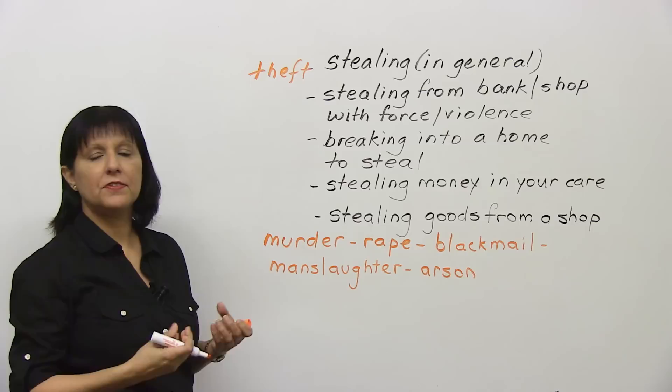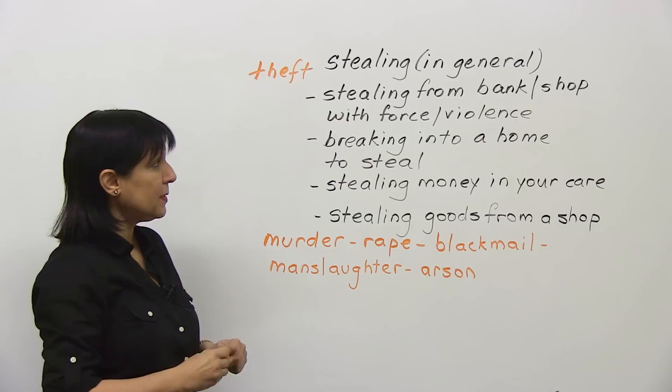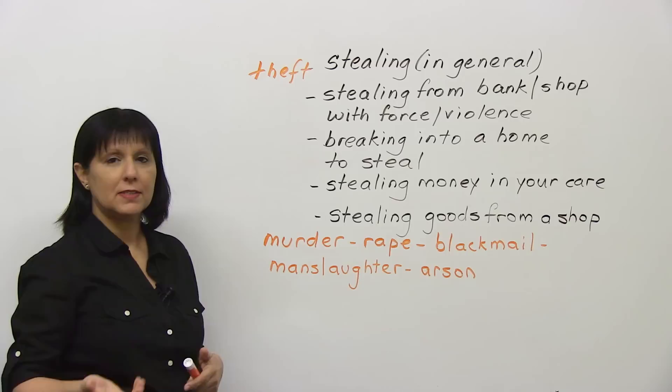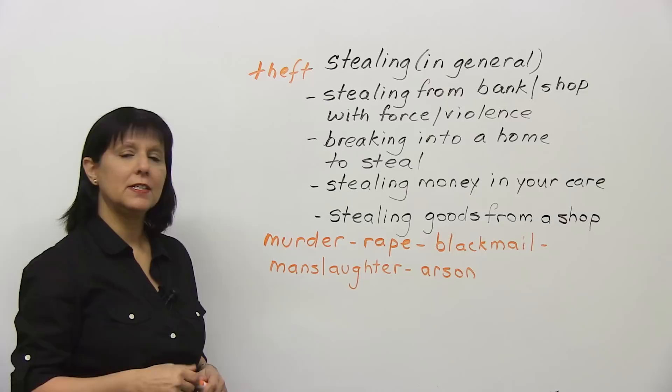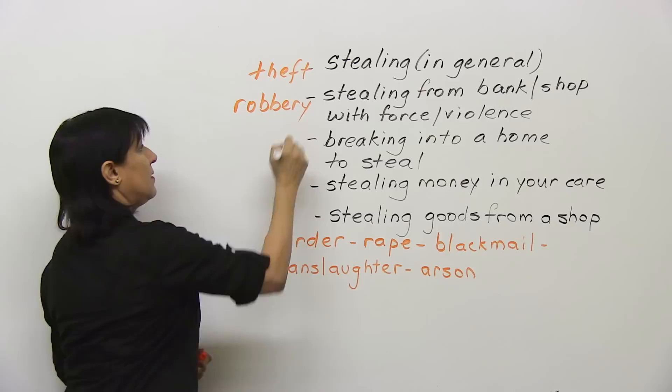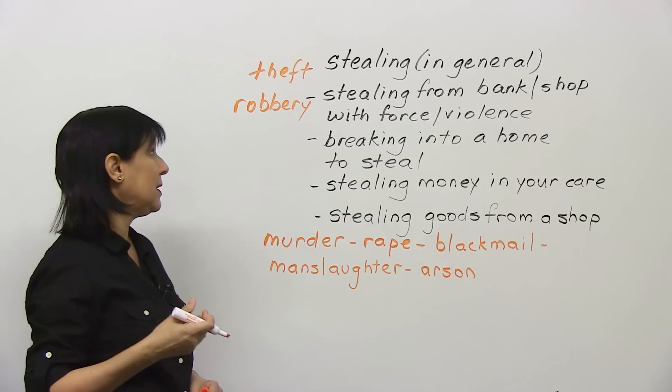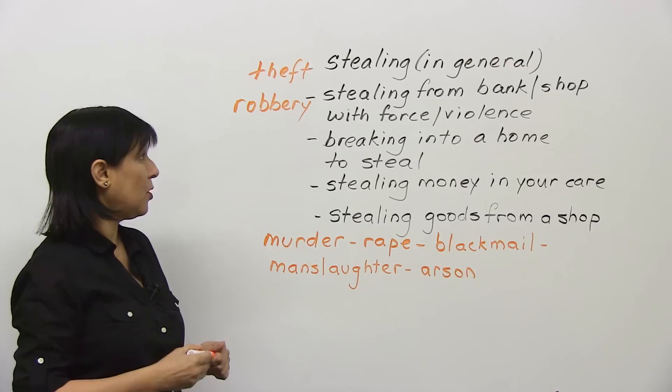Stealing from a bank or shop with force or violence, with a gun perhaps — what's that? It's kind of stealing again but it has a different word. It starts with an R — it's called robbery. And the person is a robber. It might be a bank robber, but it doesn't have to be only a bank robber; it could also be a robber in a store.